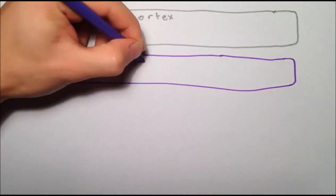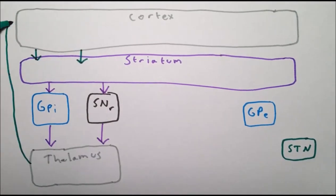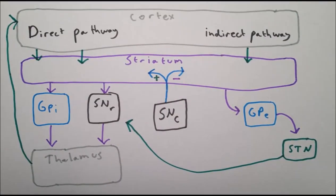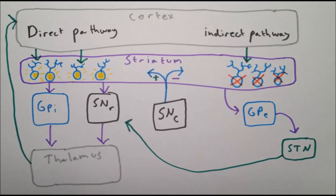The model can also help explain Huntington's disease. Huntington's disease is a genetic condition characterized by an autosomal dominant mutation in the Huntington gene. This mutation leads to the loss of cells in the striatum, and the cells which are lost are mainly part of the indirect pathway. As neurons in the indirect pathway die, it becomes less effective at inhibiting the thalamus. This results in an imbalance in favor of the direct pathway, which is now much more active than the indirect pathway, resulting in excessive activation of motor programs and causing excessive abnormal movements, known as chorea, which are characteristic of Huntington's disease.